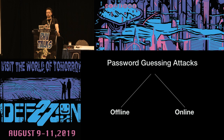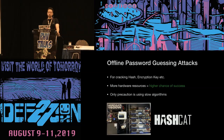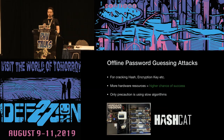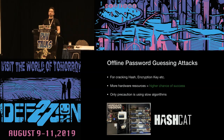Password guessing attacks are usually described in two main categories: offline and online attacks. Offline password guessing attacks are usually conducted against captured hashes or encryption keys. For example, for hash cracking, the attacker calculates some password hash and compares it with the target hash. The two variables affecting success, other than password complexity, are hardware resources and the type of hashing algorithm. More hardware resources provide speed and increase the chance of success. For example, cracking an MD5 hash will be faster than cracking a bcrypt one.